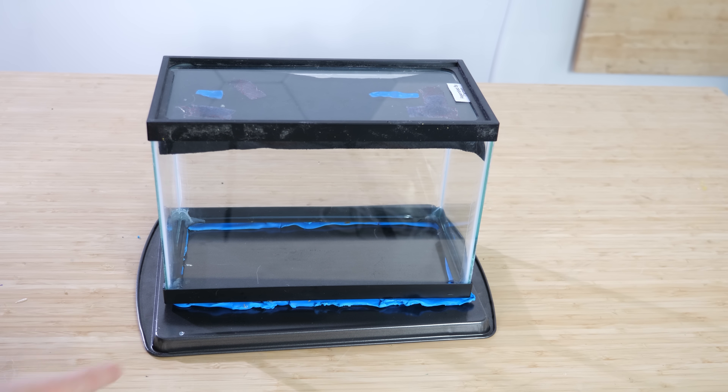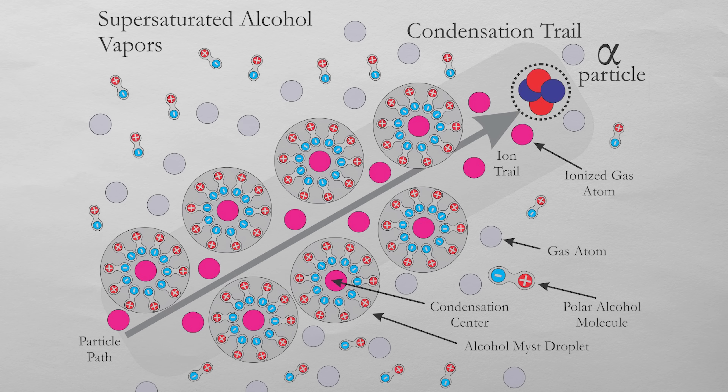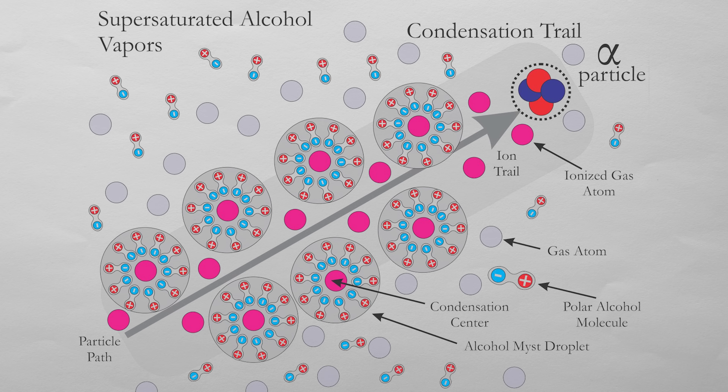A cloud chamber uses super-cooled alcohol vapor, which is right on the edge of condensing into tiny droplets. When a high-energy particle flies through the air, it creates a path of ionized air molecules. These ionized air molecules trigger a chain reaction, condensing alcohol vapor into tiny droplets. So all you have to do is look for a tiny path of condensed droplets — that's the path that the particle took.